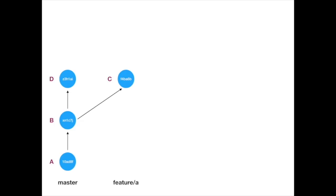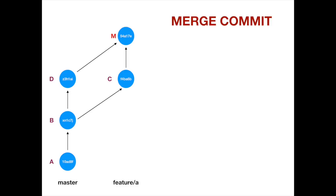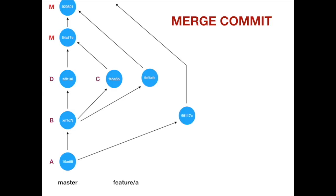In the end, these two commands' purpose is the same — integrating changes from one branch into another — but their usages are quite different. If the feature branch is ahead of master, which means all commits in master are also in the feature branch with extra commits on top, there is no extra effort while merging and all commits are just transferred to master. But if the feature branch is behind master, a merge commit is created to accomplish the merge.